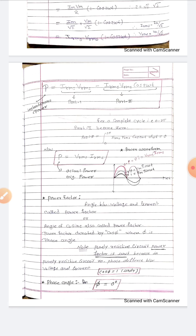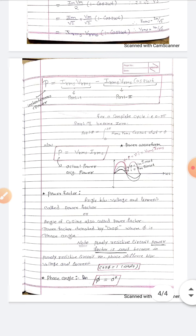After finding instantaneous power, we discuss power factor. Power factor is the cosine of the angle between voltage and current, denoted as cos(φ). In a purely resistive circuit, the power factor is unity because there is no phase difference between voltage and current, so cos(φ) = 1. The phase angle φ represents the angle between applied voltage and current. In a purely resistive circuit, voltage and current are in the same phase, so the phase angle is zero.